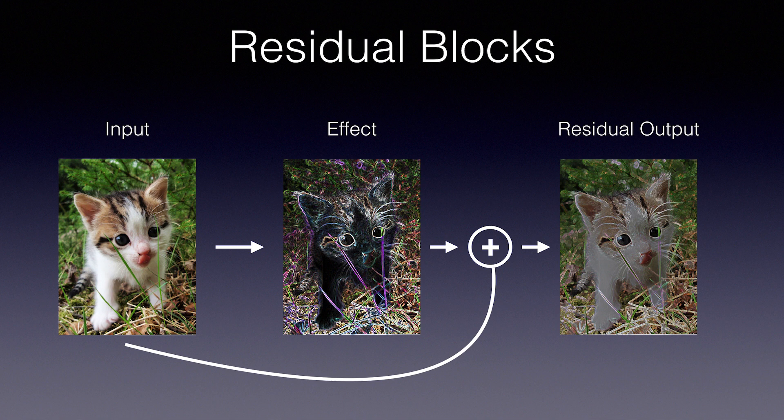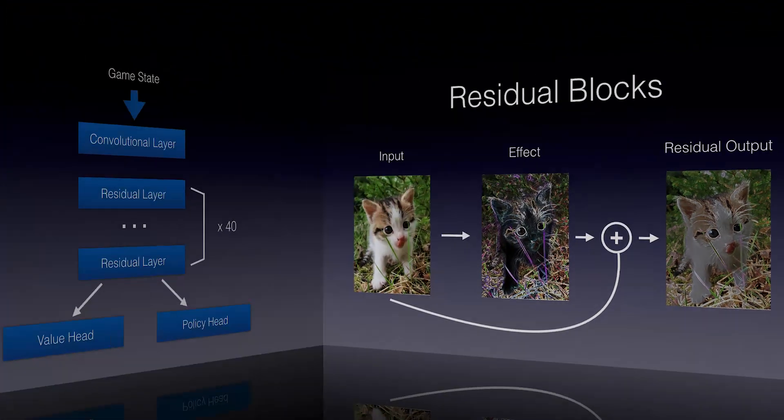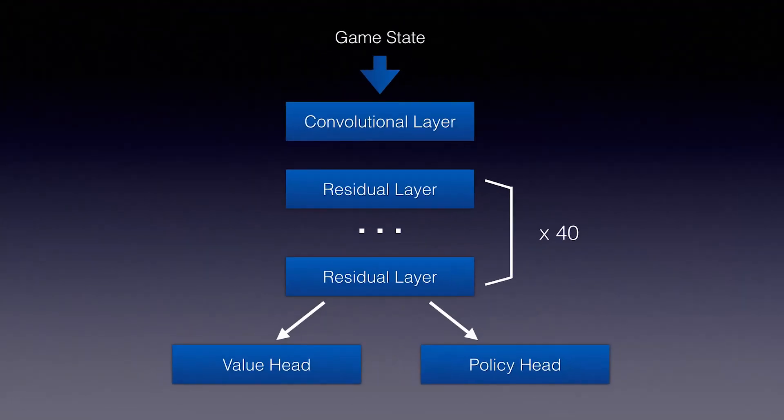Again, if you want to learn more, I'll leave a link in the description. Here's the big picture of the AlphaZero neural network. It's made of building blocks, so let's look at the overall design and then we'll take a microscope to each type of block.